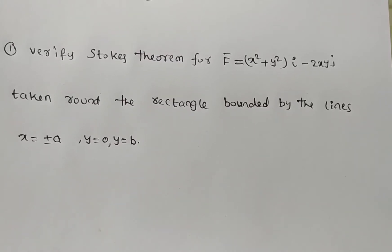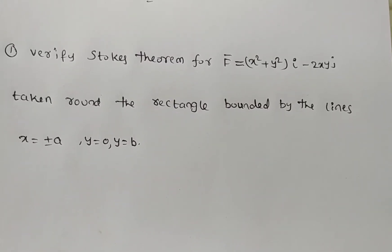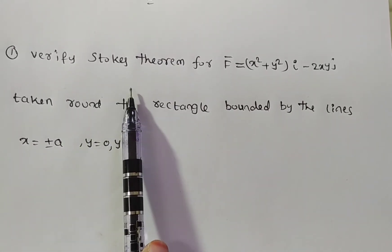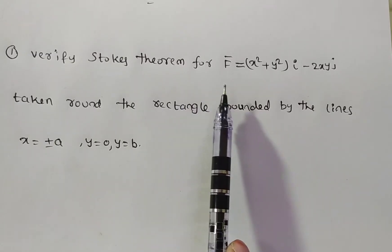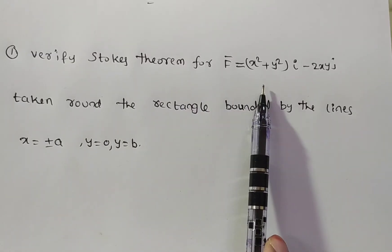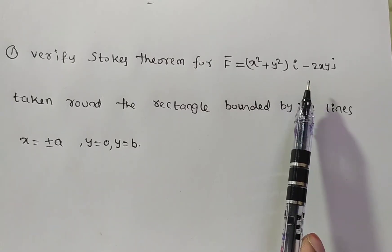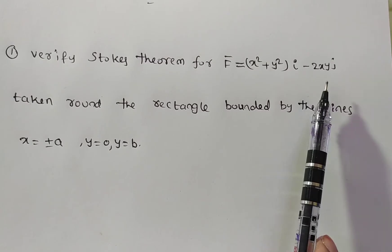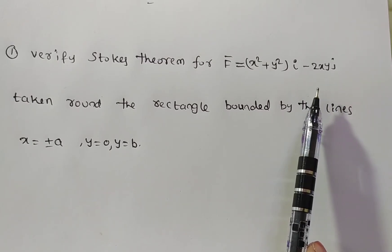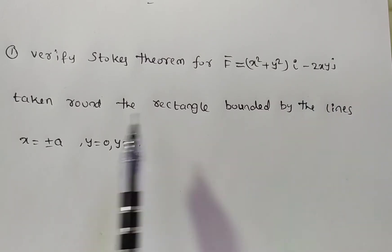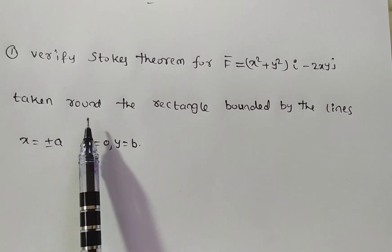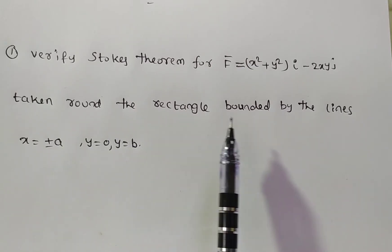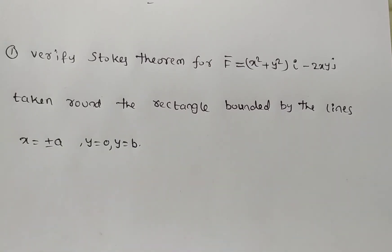Friends, the given problem is: verify Stokes theorem for f̄ = (x² + y²)i - 2xyj, taken around the rectangle bounded by the lines x = ±a and y = 0 to y = b.